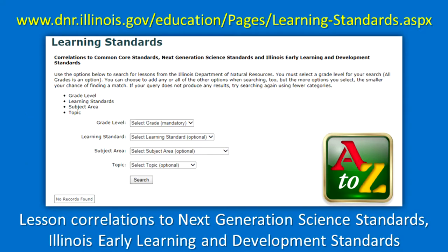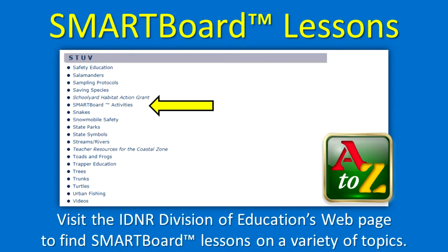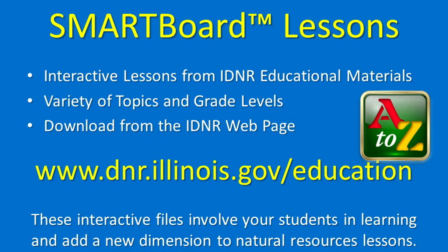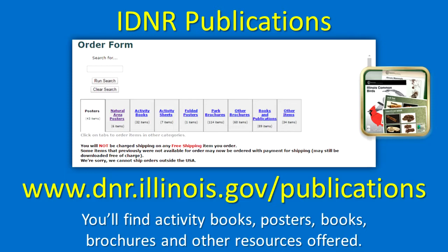Lesson correlations to Next Generation Science Standards, Illinois Early Learning and Development Standards, and other learning standards are available on a searchable webpage. Visit the IDNR Division of Education's webpage to find SmartBoard lessons on a variety of topics — these interactive files involve your students in learning and add a new dimension to natural resources lessons. Order or download educational materials from the IDNR Publications page. You'll find activity books, posters, books, brochures, and other resources offered.